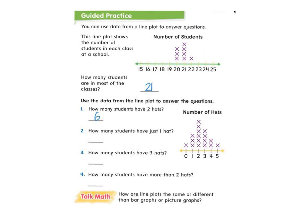How many students have just one hat? I'm going to find the one on the line plot and count the X's: one, two, three. Three students have just one hat. How many students have three hats? I'm going to find the three on the line plot and count: one, two, three, four students.